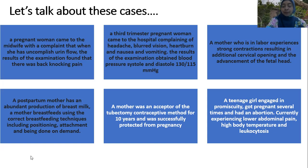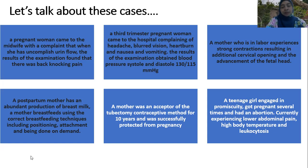The sixth case: a teenage girl involved in promiscuity — free sex — got pregnant several times and had an abortion. She is currently experiencing lower abdominal pain, high body temperature, and leukocytosis. It's a sad case. Can you figure out what this case is?